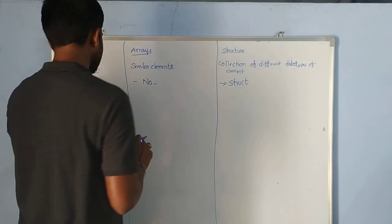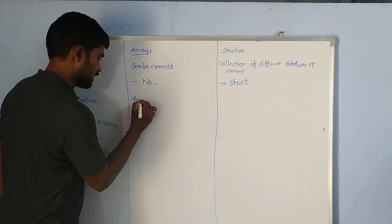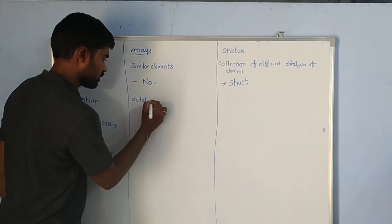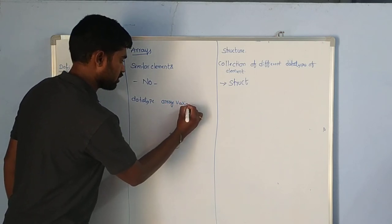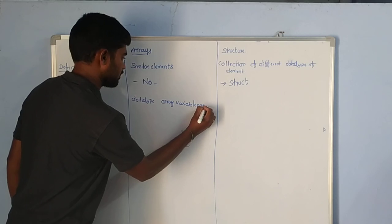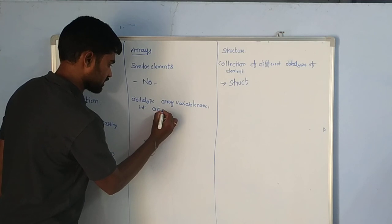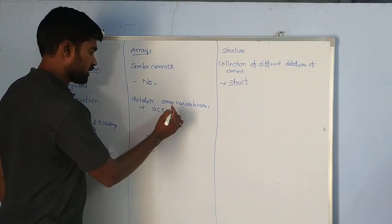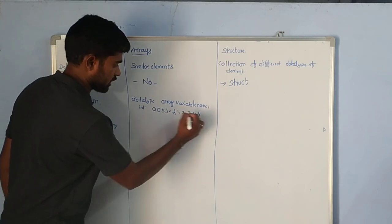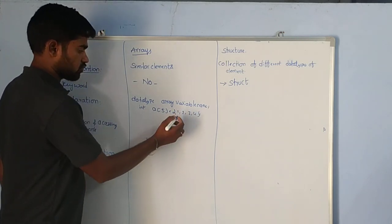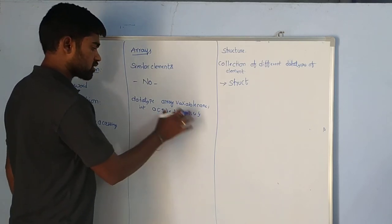What is the declaration of arrays? We require the data type and the array variable name. For example: integer array variable 'a' of size 5 — meaning we can store elements 1, 2, 3, 4, 5 in it. These are similar elements of the same data type, and that is called an array.